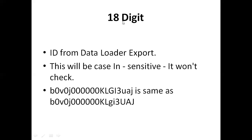The 18 digit ID comes from the data loader export. There is an export functionality in the data loader — when you open the data loader UI, you will get the export button on the right side. This 18 digit ID will be case insensitive. That means it won't check for the case of letters in the record ID, so this record ID is the same as the capital one also.